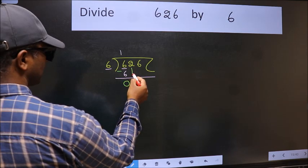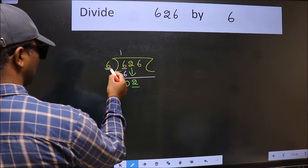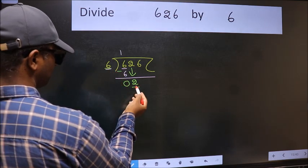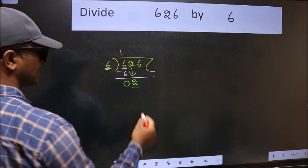After this, bring down the beside number. So 2 down. Now here we have 2 and here 6. 2 is smaller than 6, so we should bring down the second number.